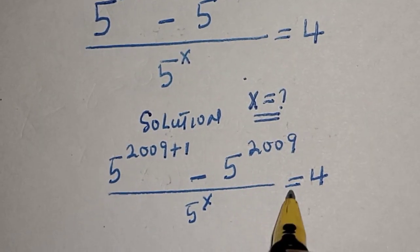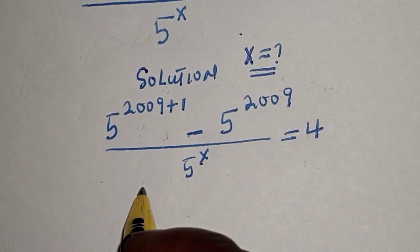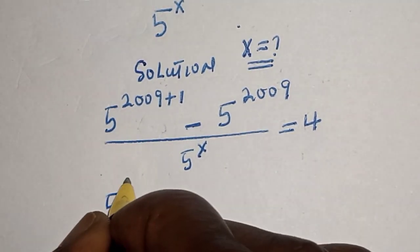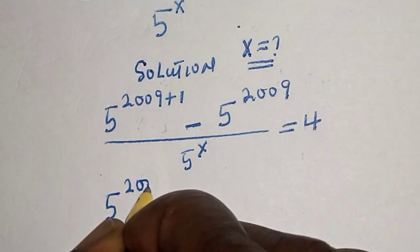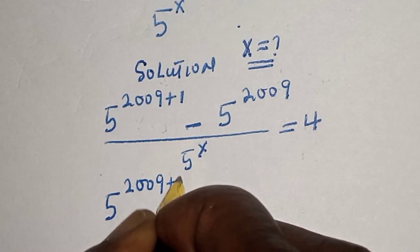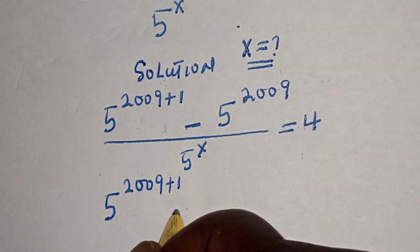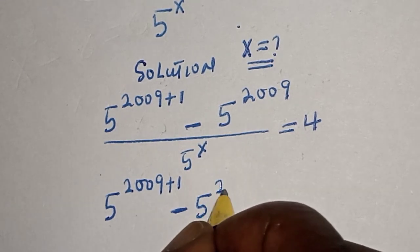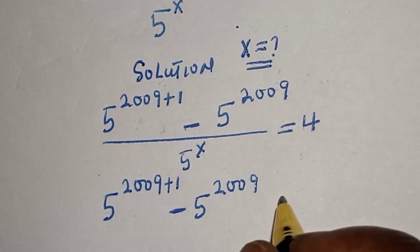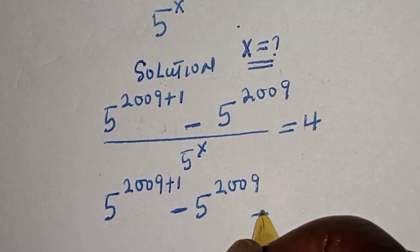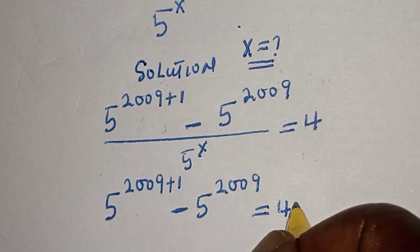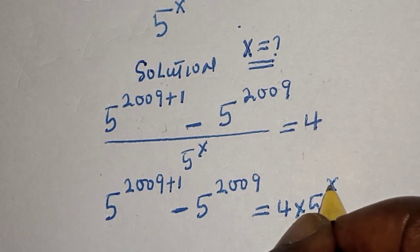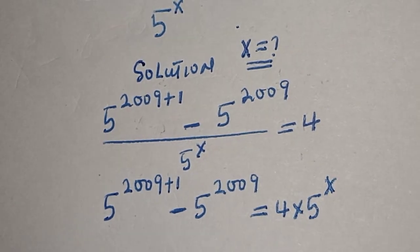Now let's cross multiply. We have: 5 raised to power 2009 plus 1, minus 5 raised to power 2009, is equal to 4 multiplied by 5 raised to power s.